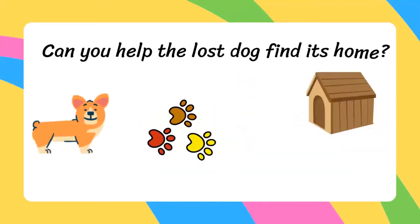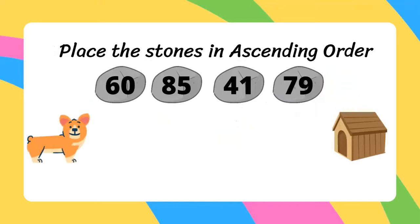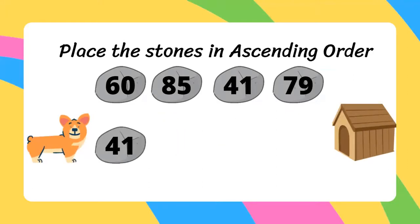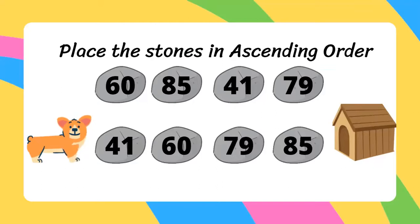Can you help the lost dog find its home? To do that, you have to place the stones in ascending order — that means placing the numbers from small to big. The smallest number is 41, then 60, next is 79, and the biggest number is 85. Well done!